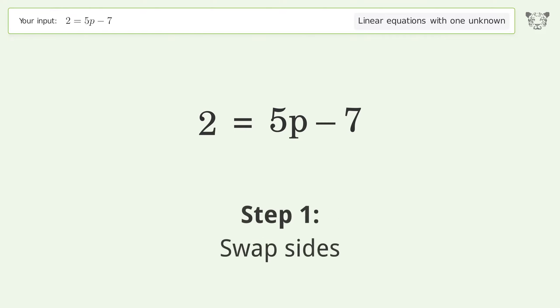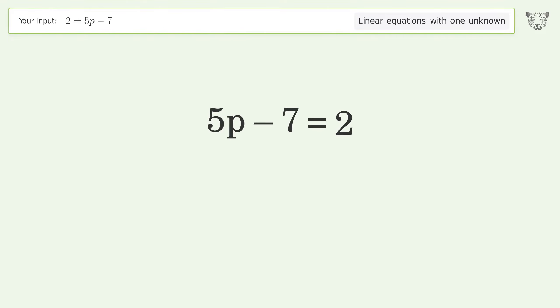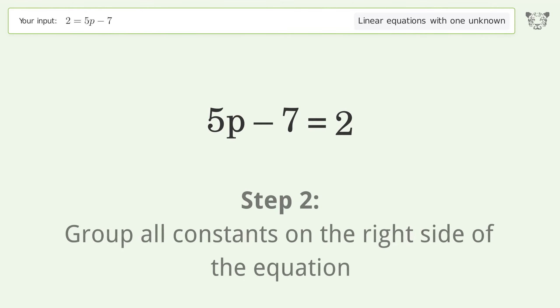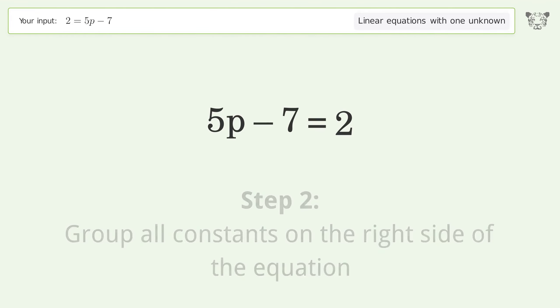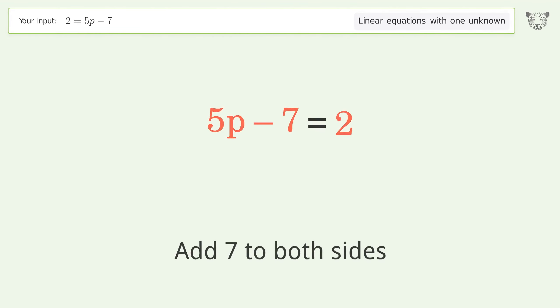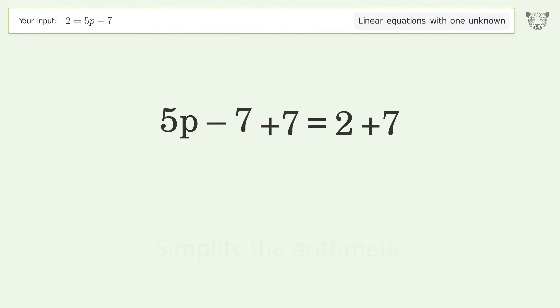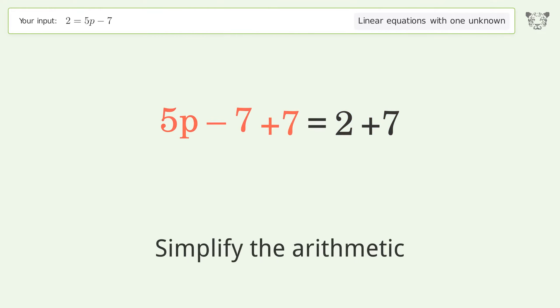Swap sides. Group all constants on the right side of the equation — add 7 to both sides. Simplify the arithmetic.